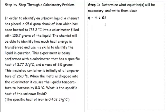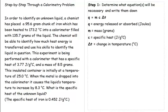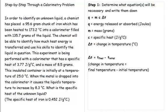Let's see what all these different variables mean. The Q stands for energy that has been released or absorbed, and it is measured in joules. M refers to the mass and will be measured in grams. C is for specific heat and will be measured in joules per grams degrees Celsius. Delta T is change in temperature measured in degrees Celsius. We'll need to calculate that change in temperature, so we need this next equation: delta T equals T final minus T initial.